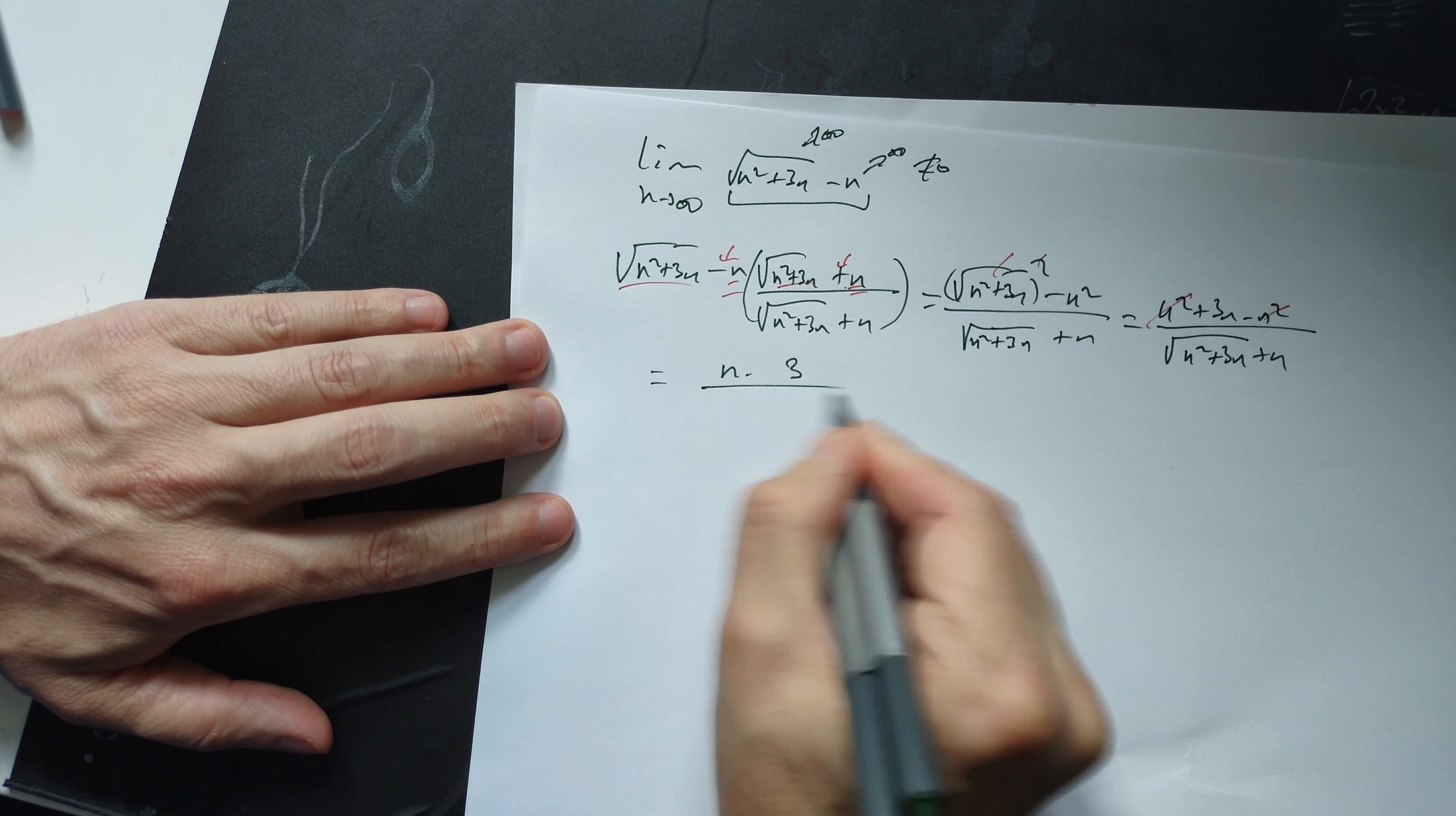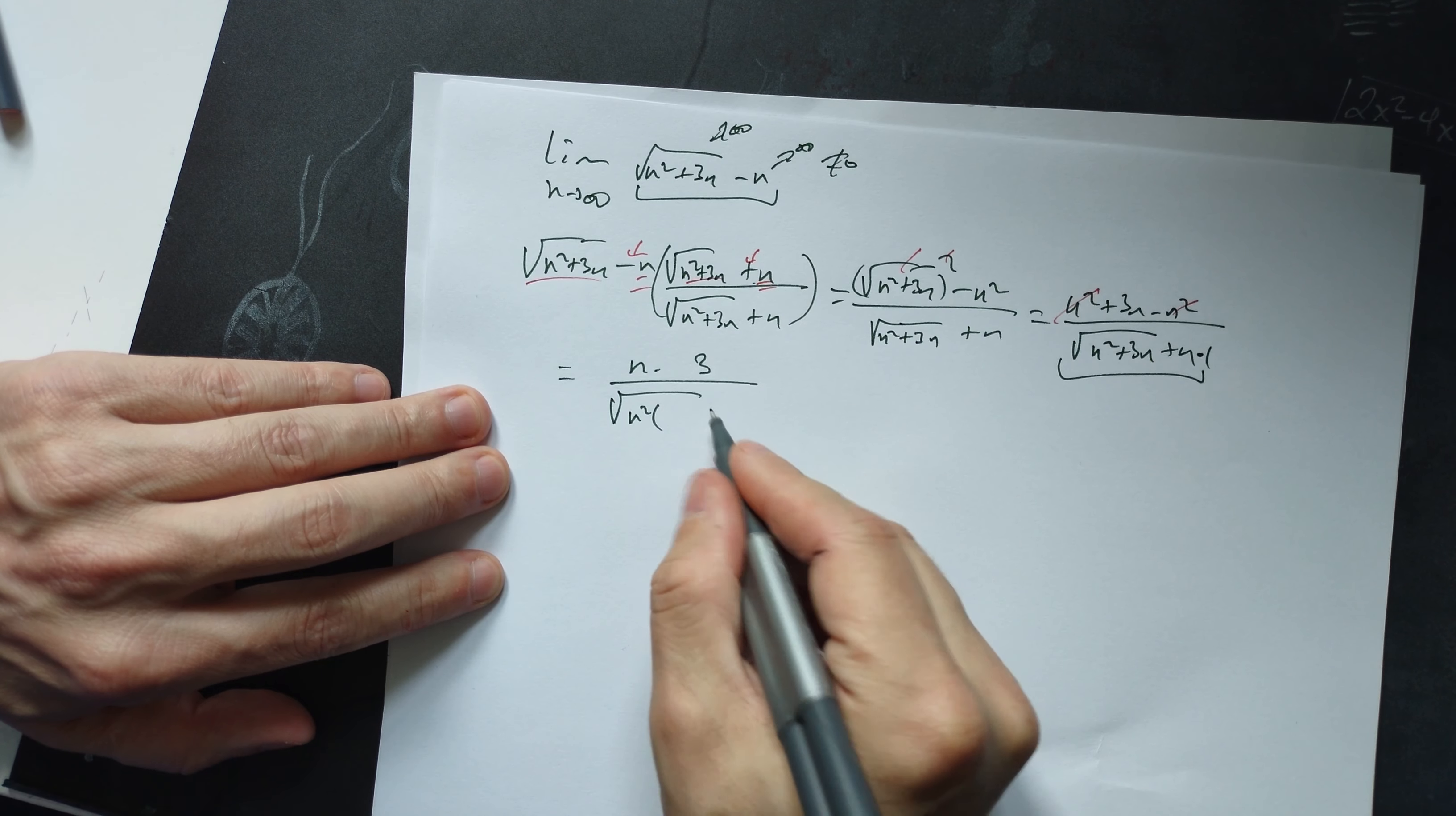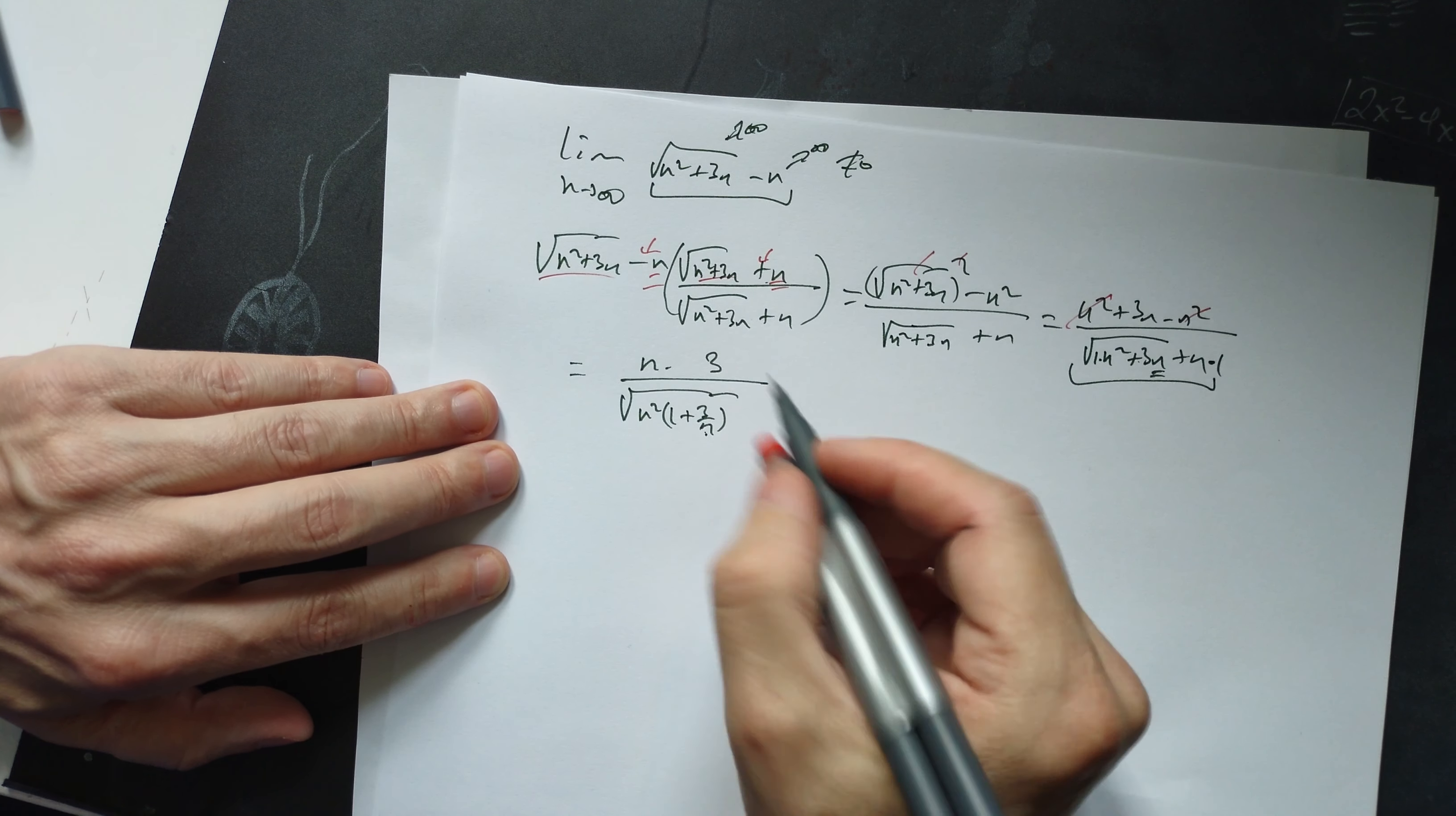Notice this is like n times 1 in this position. Handle the root symbol by factoring n² on the outside: √(n²(1 + 3/n)). When you pull out n², the n² becomes 1, and you get 3/n because n² divided by n gives you back the n.